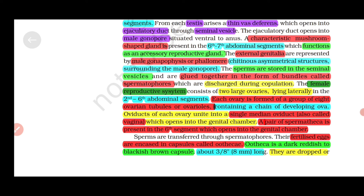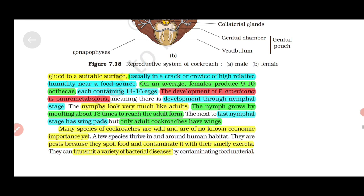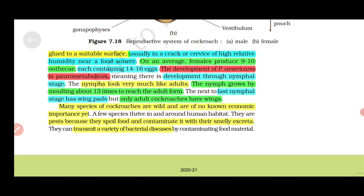The female reproductive system consists of two large ovaries lying laterally in the second to sixth abdominal segments. Each ovary is formed of a group of eight ovarian tubules or ovarioles containing a chain of developing ova. Oviducts of each ovary unite into a single median oviduct, also called vagina, which opens into the genital chamber. A pair of spermathecae is present in the sixth segment, which opens into the genital chamber. Fertilized eggs are encased in capsules called oothecae. Oothecae are dark reddish to blackish brown capsules that are dropped or glued to a suitable surface, usually in a crack or crevice of high relative humidity near a food source. On average, females produce 9 to 10 oothecae, each containing 14 to 16 eggs.